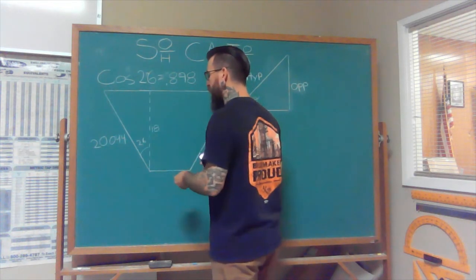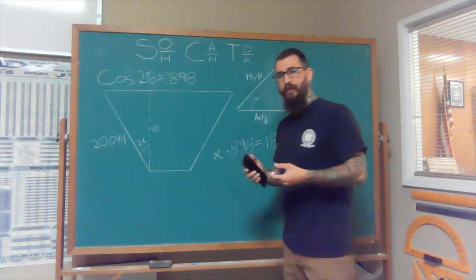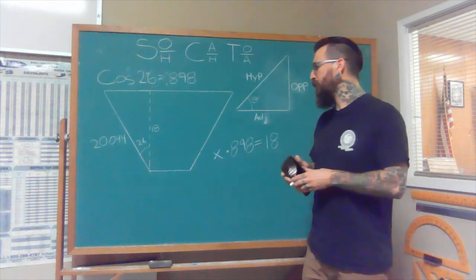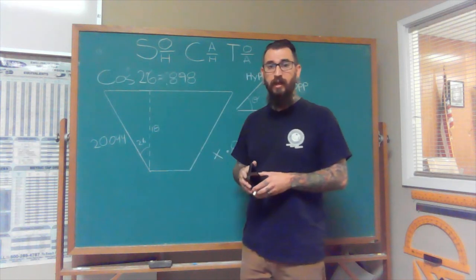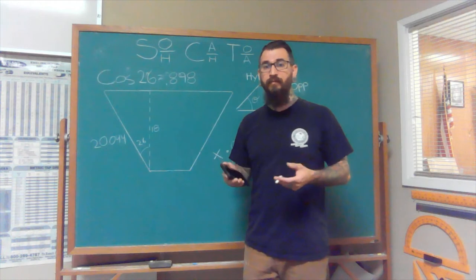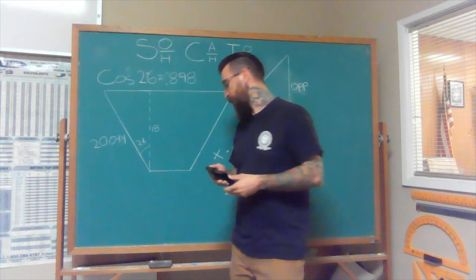What if it was the opposite? What if we knew the length of the hypotenuse, and we knew the length of the adjacent leg, but we needed to find out the angle? That's just good old-fashioned trigonometry.